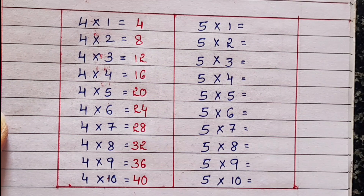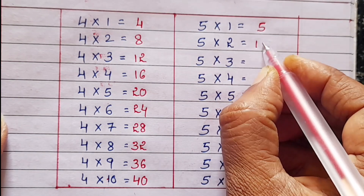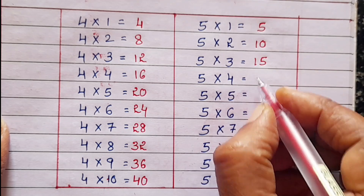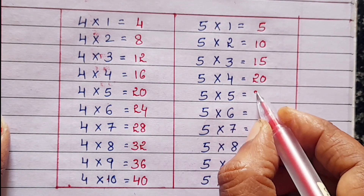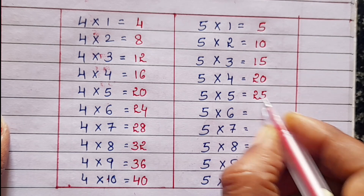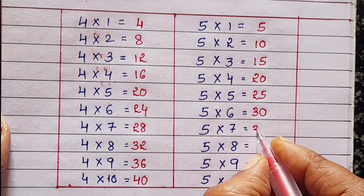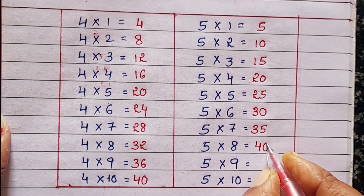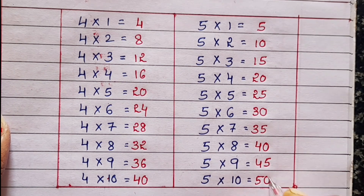5 1s 5, 5 2s 10, 5 3s 15, 5 4s 20, 5 5s 25, 5 6s 30, 5 7s 35, 5 8s 40, 5 9s 45, 5 10s 50.